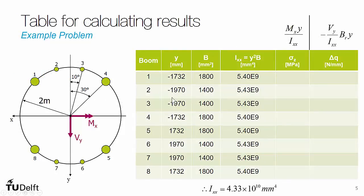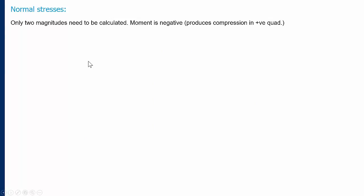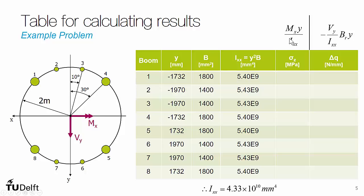We can take these results and tabulate them. The y-coordinates now have the correct signs applied: booms 1, 2, 3, and 4 are on the negative y side of the axis, while booms 5, 6, 7, and 8 are on the positive y coordinate side. We have our moments of inertia. Now we need to calculate our stresses and delta q's.